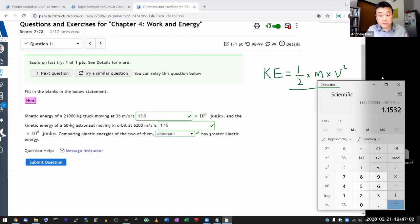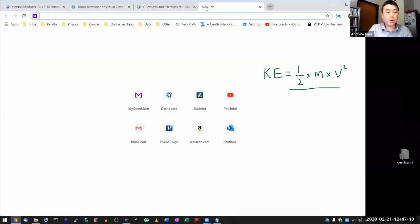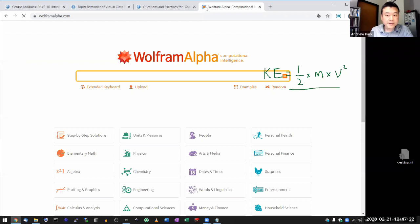Now, sometimes calculators are frustrating to work with. How physical calculators work sometimes can be very unintuitive. Then one kind of tool that I recommend that you know where it is, is online tool, Wolfram Alpha. It's basically an online calculator, but it's more advanced than even Google is.